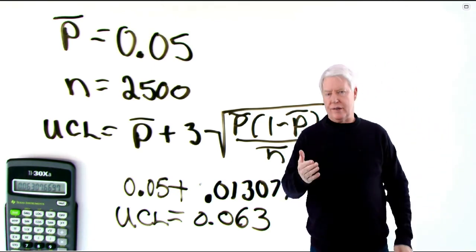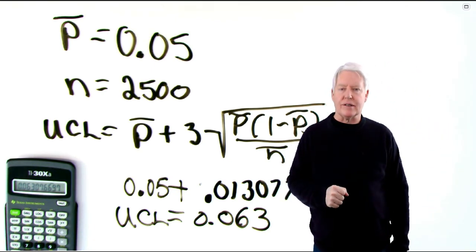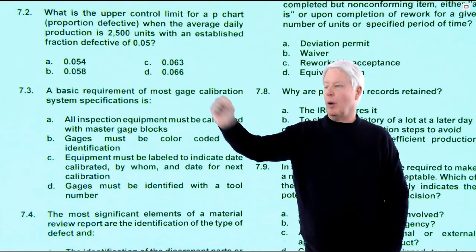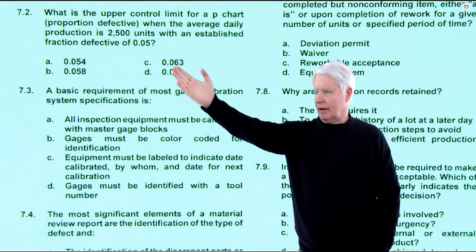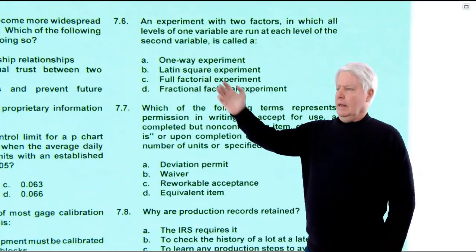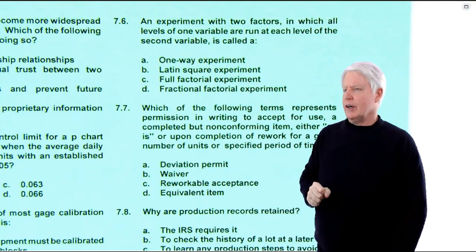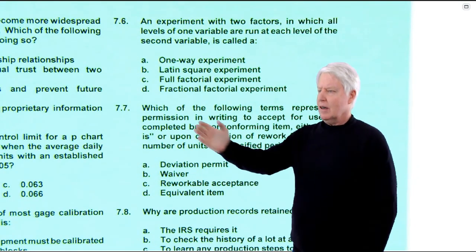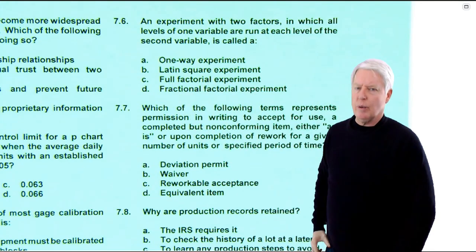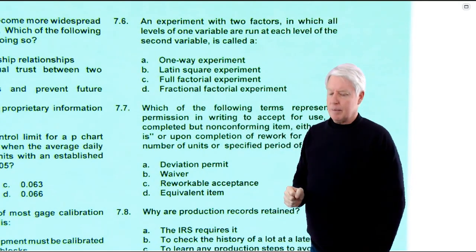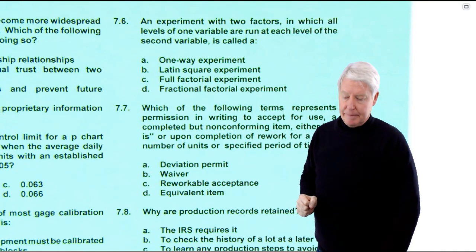Going back to the question — there it is: 0.063, the one we calculated. That is the correct answer — it is C. Question 7.6: An experiment with two factors in which all levels of one variable are run at each level of the second variable is called what? A full factorial experiment is where you run all variable-level combinations. So 7.6 must be C, and it is.